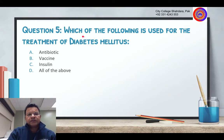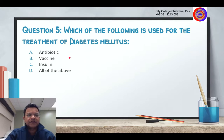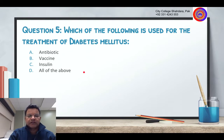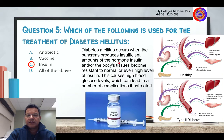Question number five: which of the following is used for the treatment of diabetes mellitus? The options are antibiotic, vaccine, insulin, or all of the above. That's right — insulin.